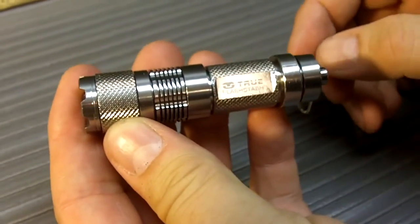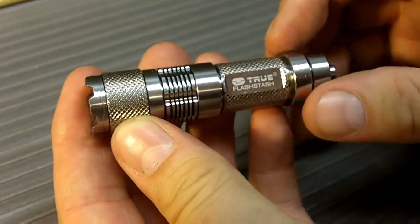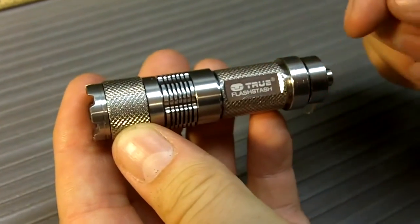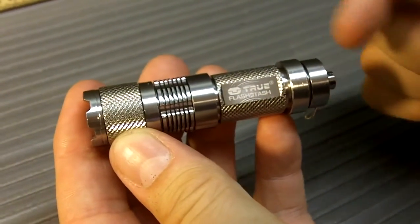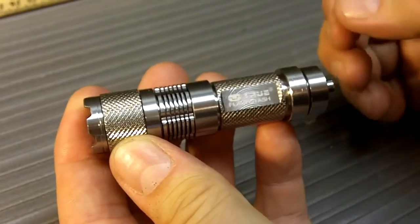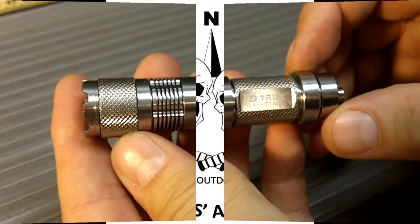So if you're looking for some type of an EDC light, give you a good amount of run time and a good light, and also a cash stash or some type of a hidden capsule to store something in, you might want to give this a look. Thank you.